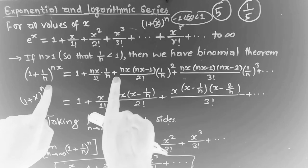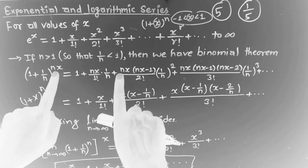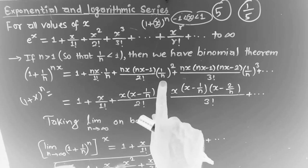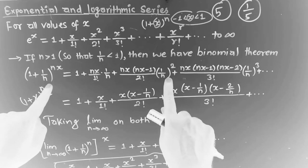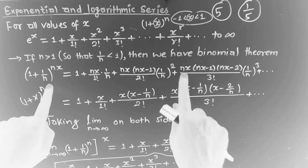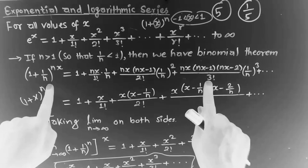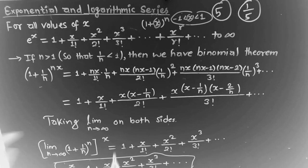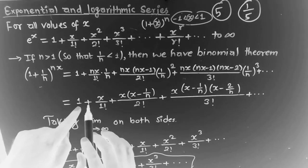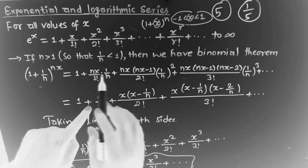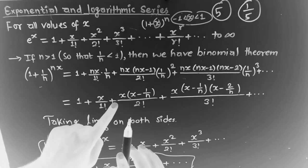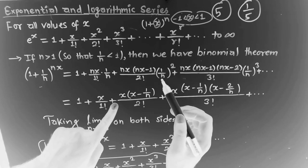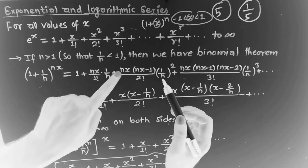In the derivation, we use x by n, x by n times (n minus 1) divided by 2 factorial times x squared, and x by n times (n minus 1) divided by 3 factorial times x cubed. Taking the limit, terms simplify: 1 plus x divided by 1 factorial, and so on.